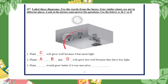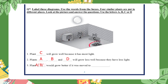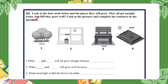Looking again at these four plants: which plant or plants would grow better if moved? Plants A, B, and D would grow better if they were moved to the place of plant C, because plant C has the most light.